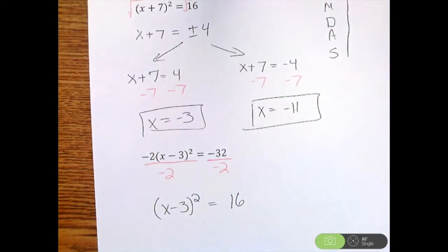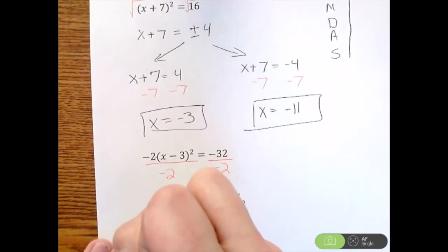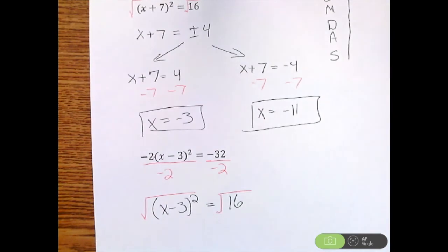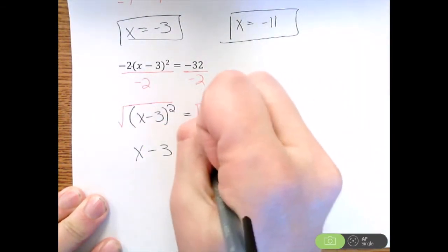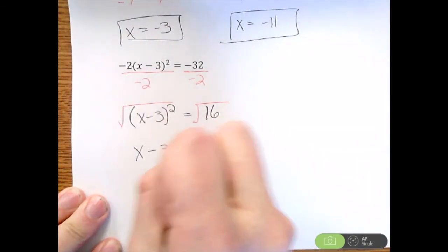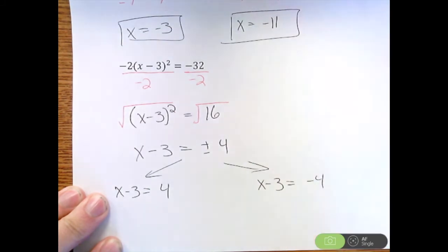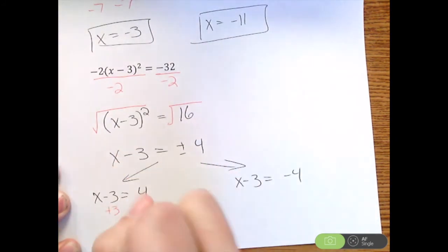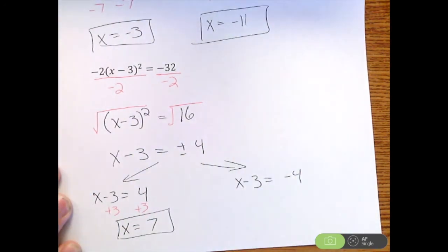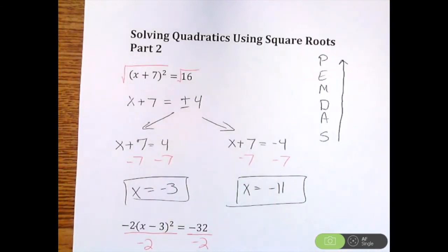What we just did brings us back to something familiar — it's like the previous problem. After division, I want to get rid of the exponent, so I square root both sides. The square root of 16 is plus or minus four, giving x - 3 = ±4. Splitting it up: x - 3 = 4 gives x = 7, and x - 3 = -4 gives x = -1. Those are the two solutions — that is solving quadratics using square roots.